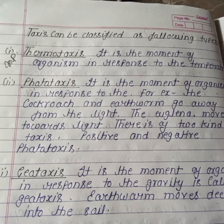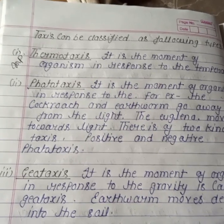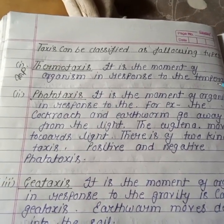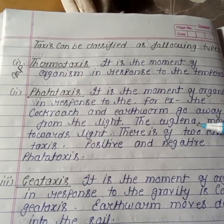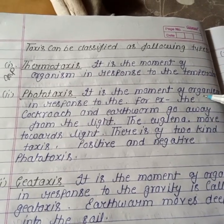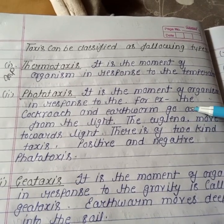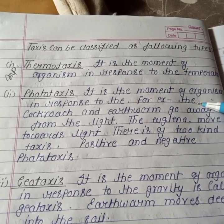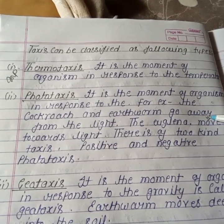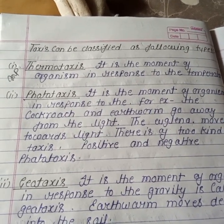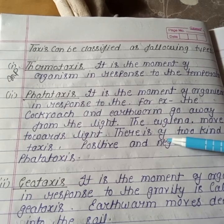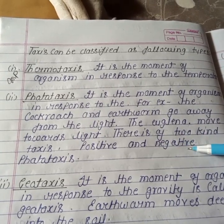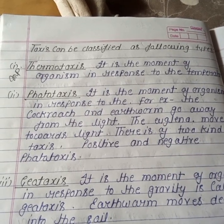Taxis can be classified into the following types. First is thermotaxis: the movement of an organism in response to temperature. Second is phototaxis: the movement of an organism in response to light. For example, cockroach and earthworm move away from light — that is negative phototaxis — while Euglena moves towards light, which is positive phototaxis.